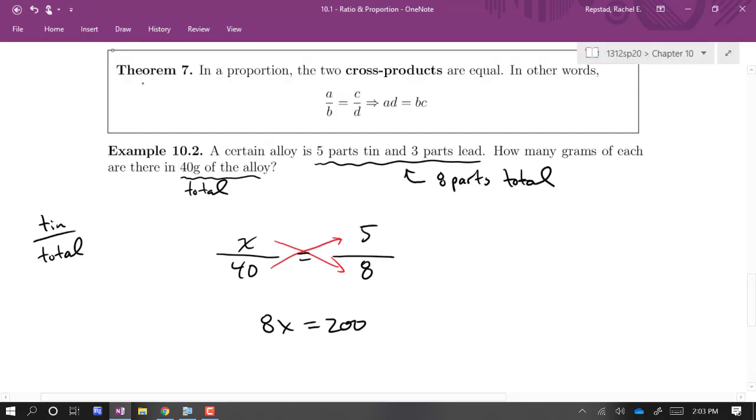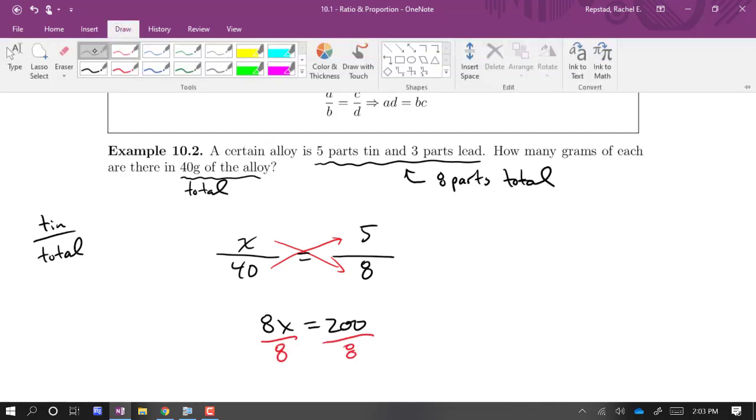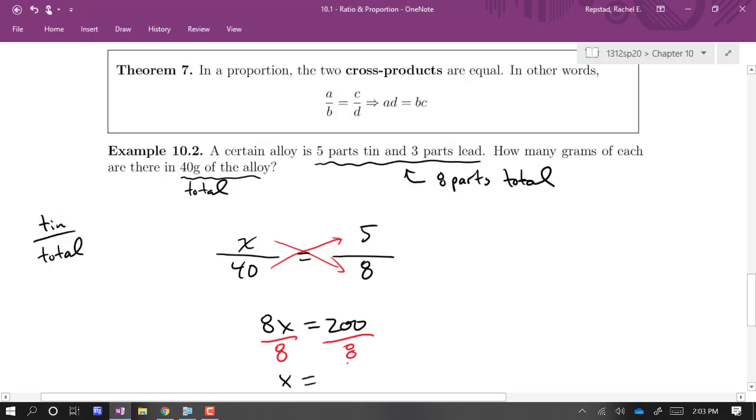And then we can divide both sides by eight. And we get 25. And this would be grams of tin.